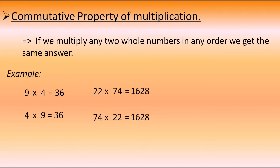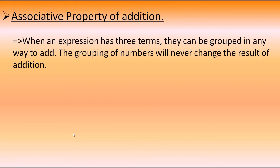Now let's move to the next property: associative property of addition and multiplication. First, we will take the associative property of addition. It says that when an expression has three terms, they can be grouped in any way to add. The grouping of numbers will never change the result of addition. Means, if we have three terms in an expression, we can make a group of the first two numbers and add, or make a group of the last two numbers and add — there will be no change in the result.